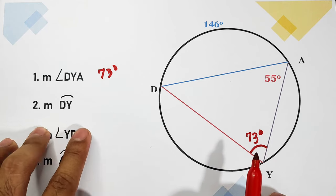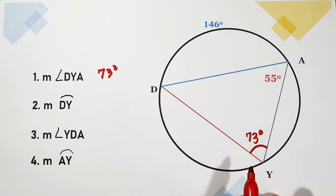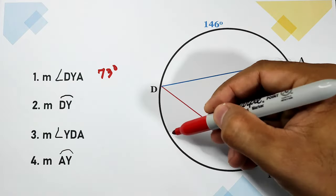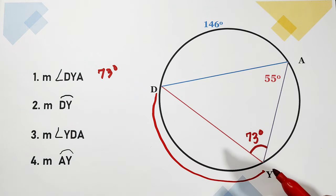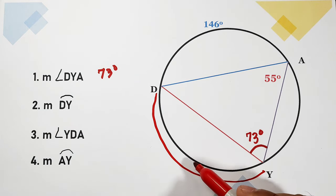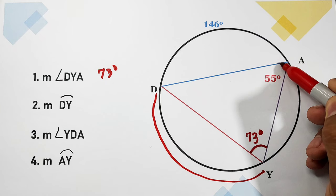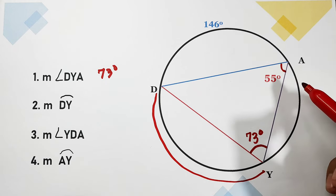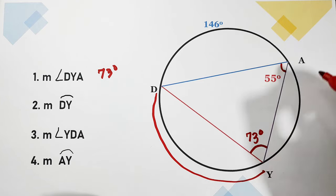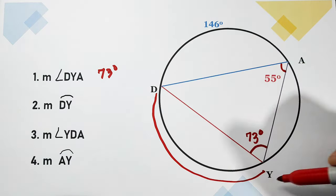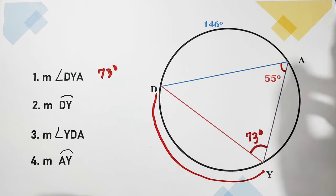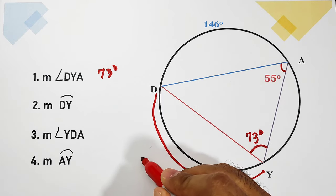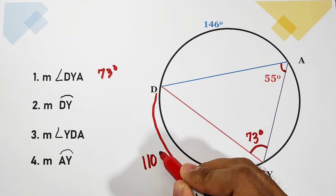For item number two, arc DY is the intercepted arc of inscribed angle DAY, the given angle being 55 degrees. Since the inscribed angle is one half of the arc, the arc is twice the inscribed angle — twice of 55 degrees equals 110 degrees. So arc DY is 110 degrees.